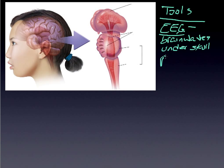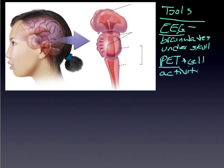Another tool is a PET scan — positron emission tomography. It basically shows cell activity by measuring the burning of glucose, which is really just cell food. Glucose is the primary supply of cell food and drives cell activity.